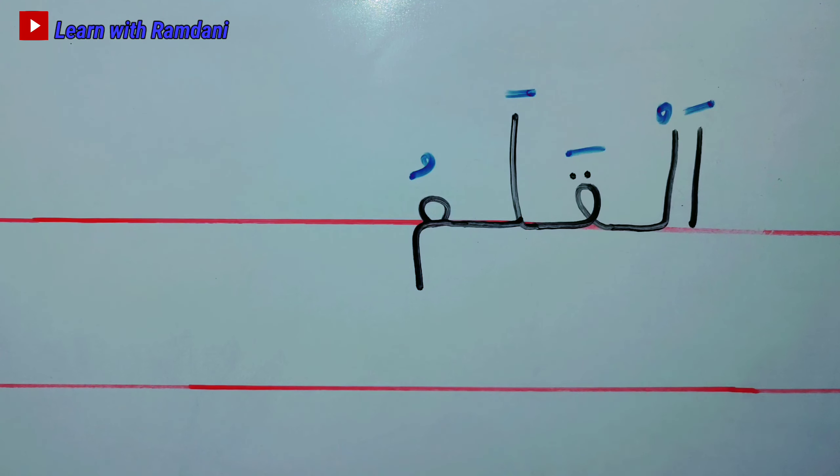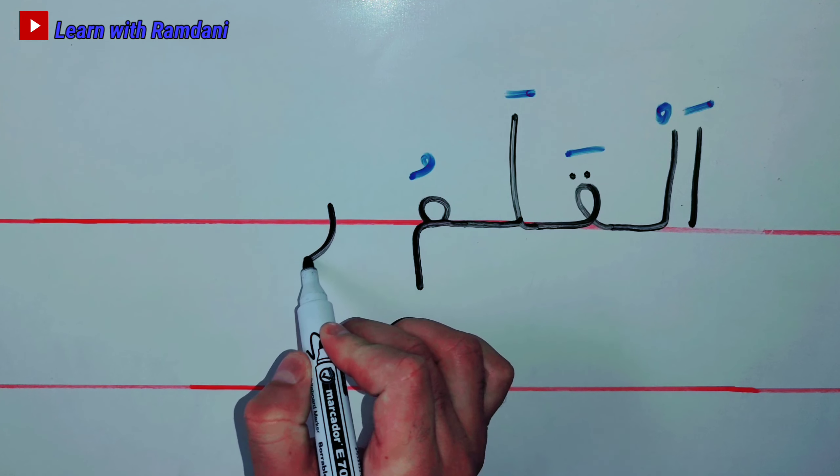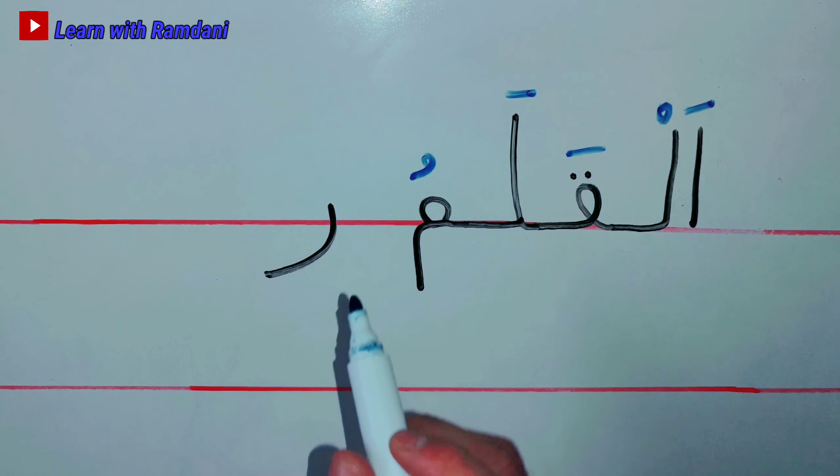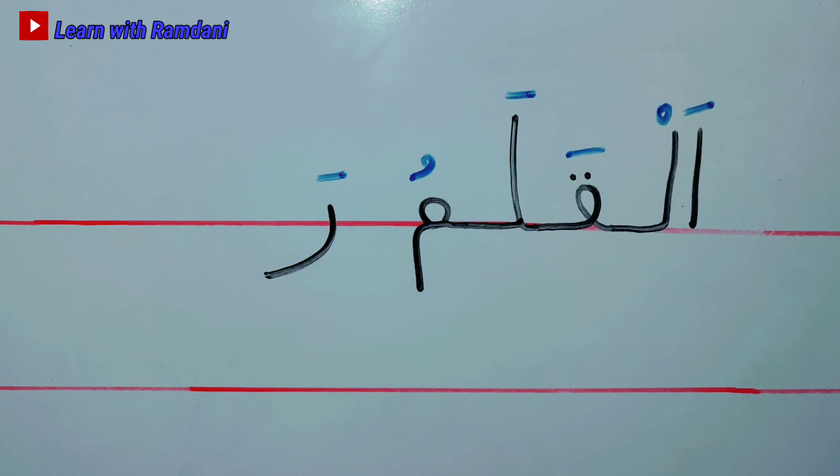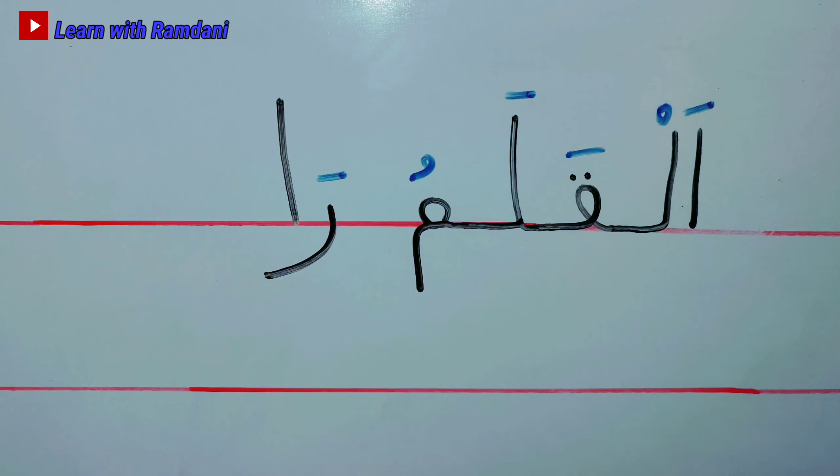The letter Ra, we put Fatha: Ra. And then the letter Alif. The letter Alif here, it's a long vowel. So, Ra, Ra. Very good job.